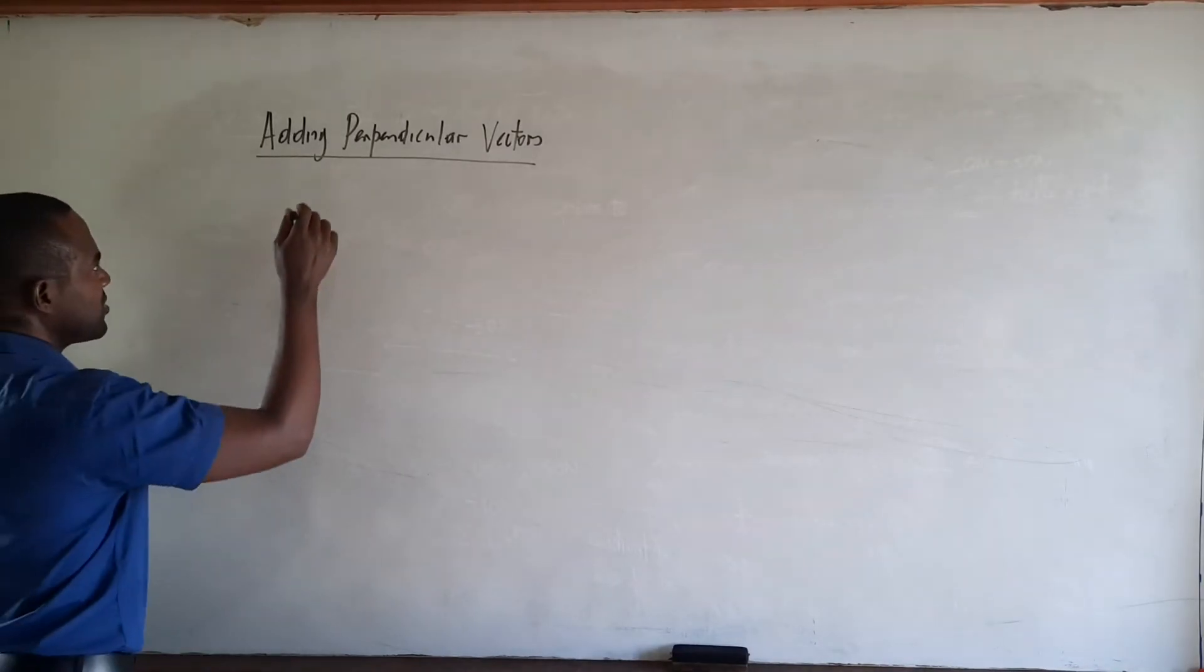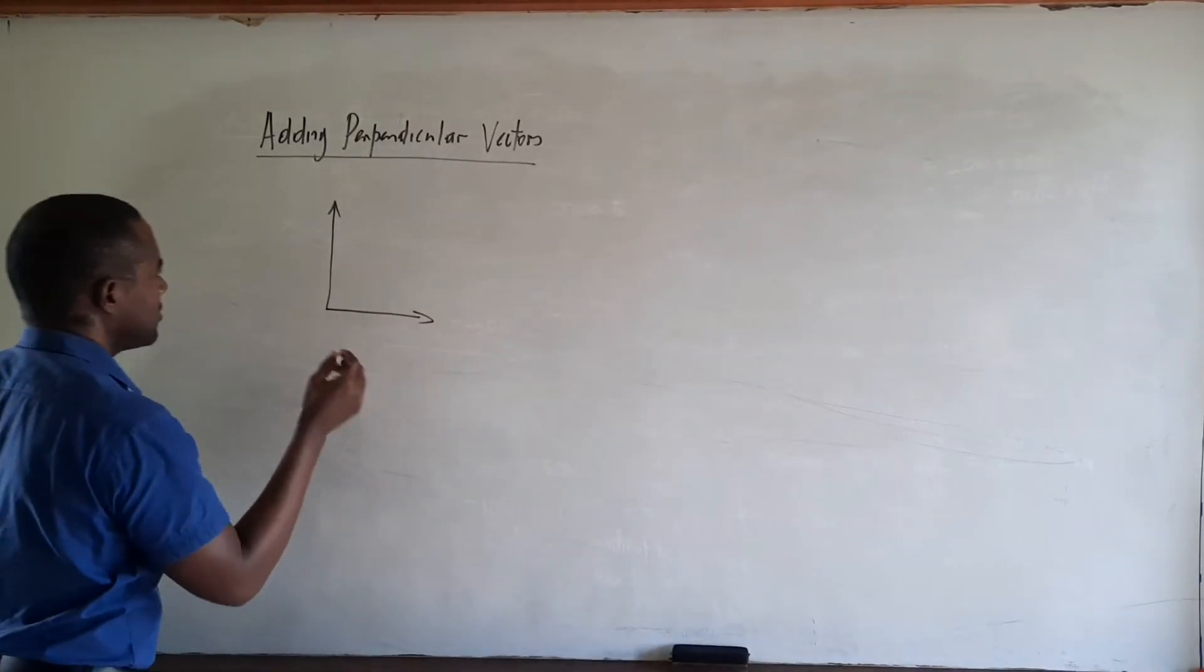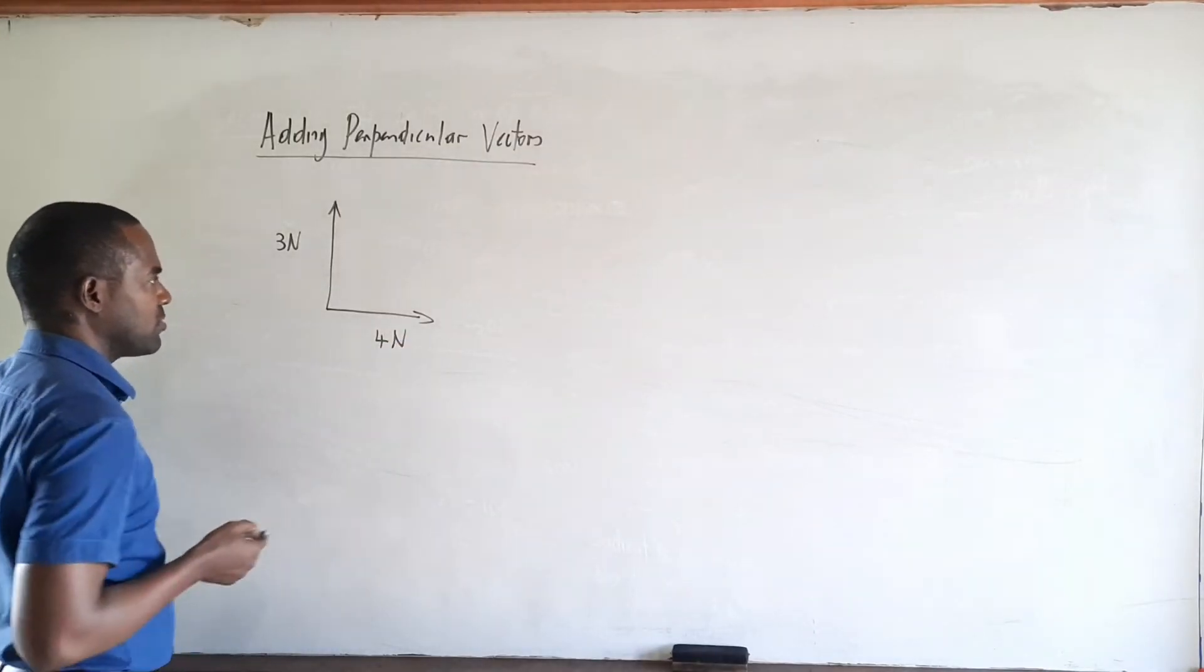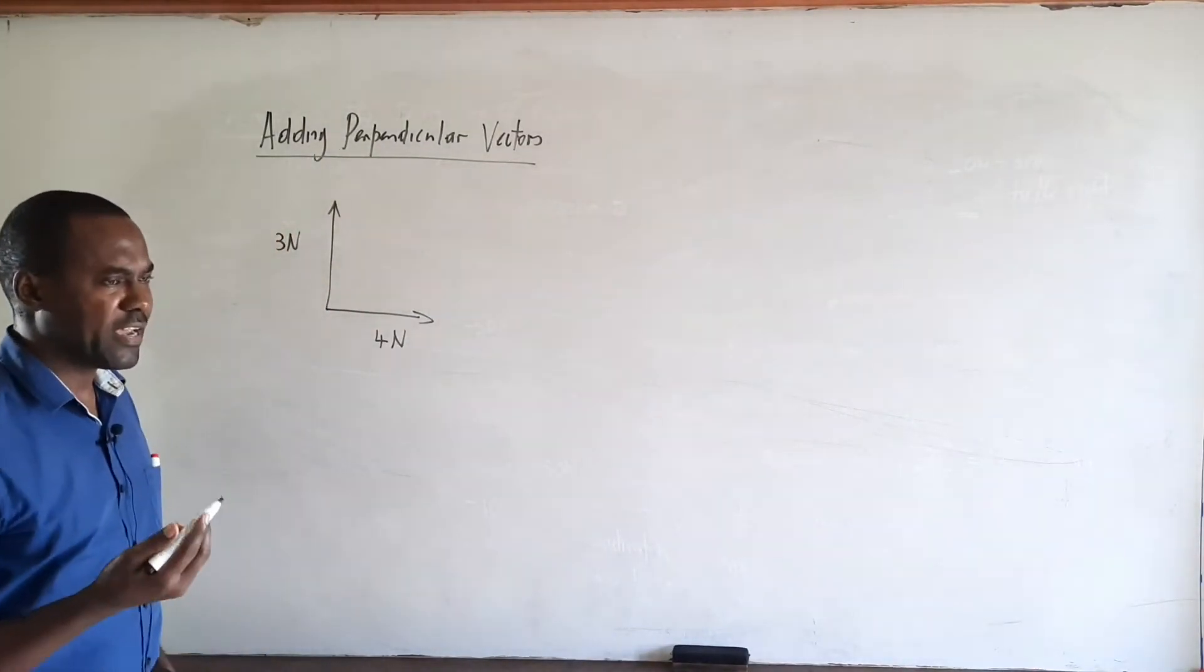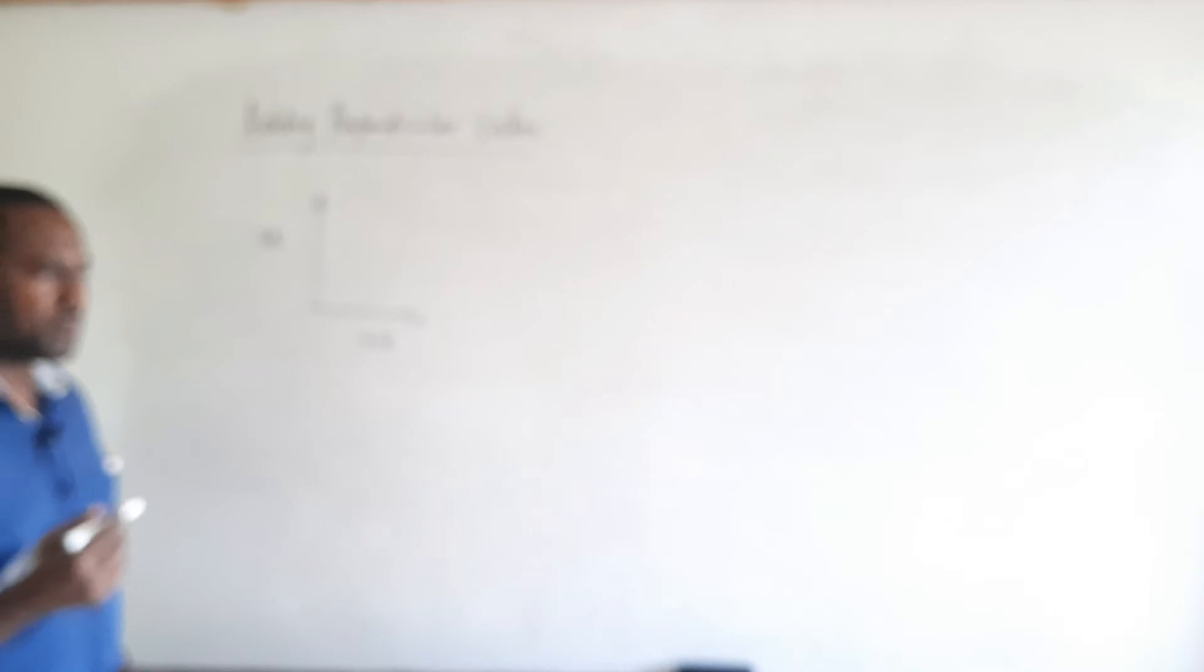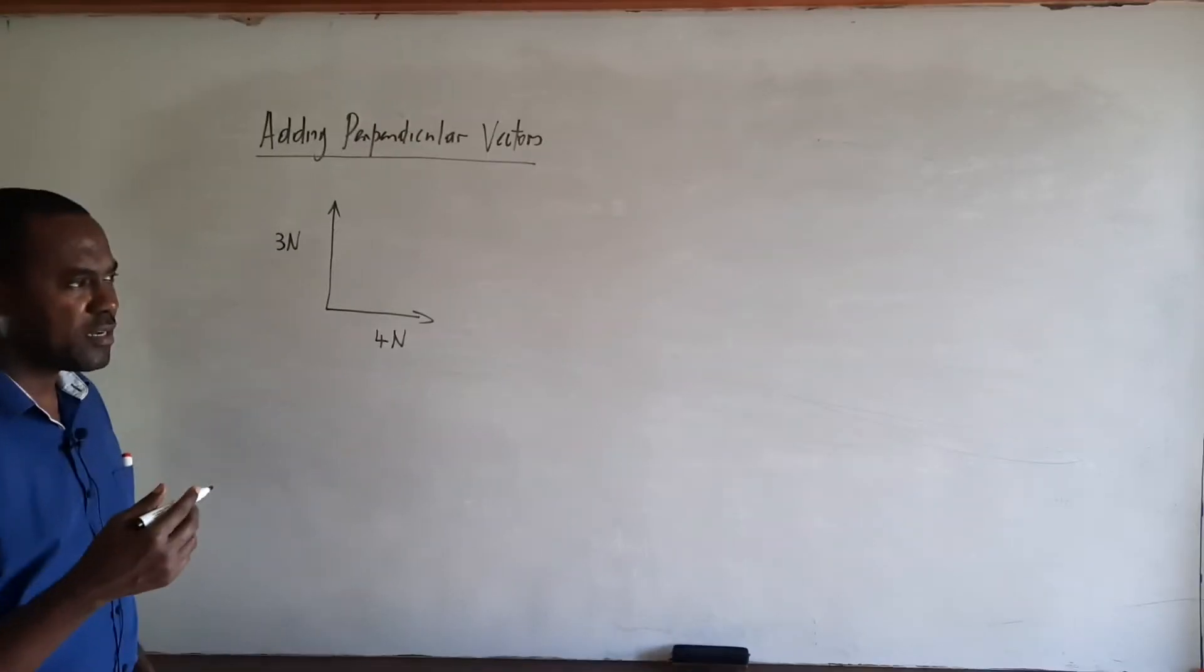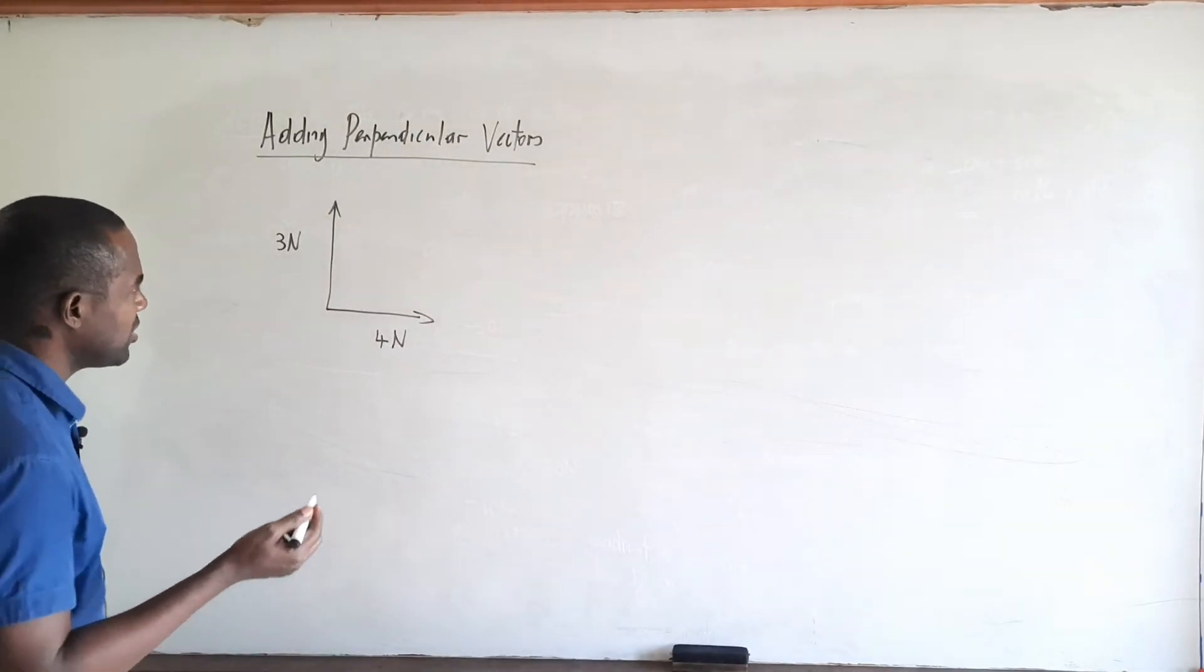Suppose we have two forces acting on an object like this. This force is of magnitude 3 Newtons acting in that direction. Now usually we tend to redraw our diagram so the vectors, in this case forces, run from tip to tail. Once we do that we can complete our vector triangle, which essentially is a half of the parallelogram, and that will show us the resultant and the direction in which it runs as well.